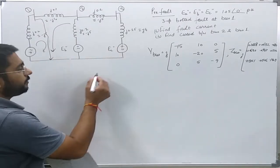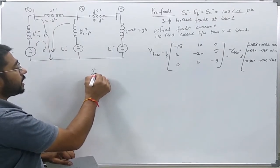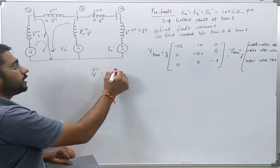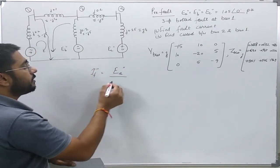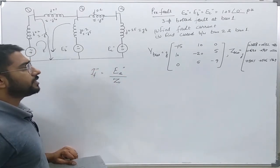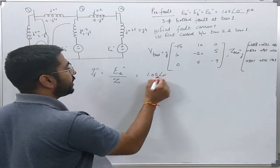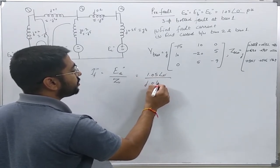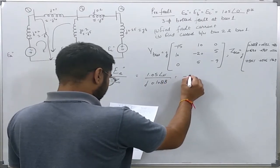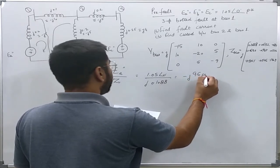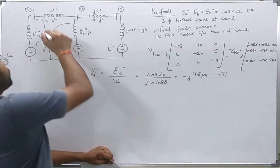We know that the fault current for a fault at bus 1 will be simply IF'' is nothing but the voltage at bus 1 before the fault occurred, equal to E_a'', divided by the Thevenin impedance at bus 1, which is nothing but Z11. So it is 1.05∠0° divided by j0.1088, and it comes out to be minus j9.6 per unit. I know that this is equal to minus of I1. I have found this current.